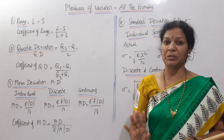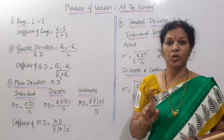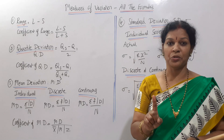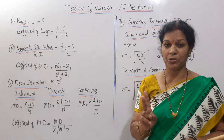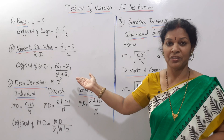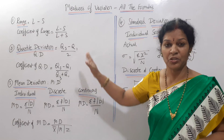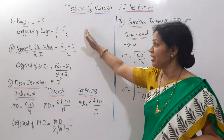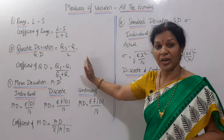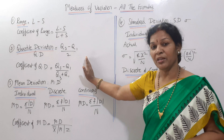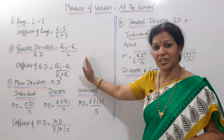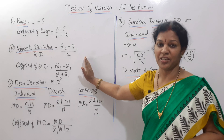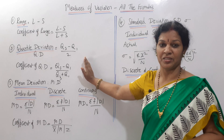Whatever may be the series — individual, discrete, or continuous — you know how to calculate Q1 and Q3. Simply apply them in the QD formula. These two formulas are applicable for all three series.